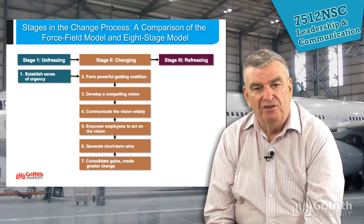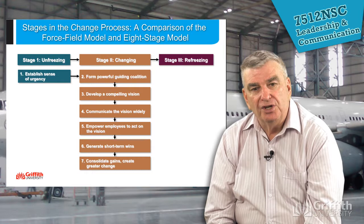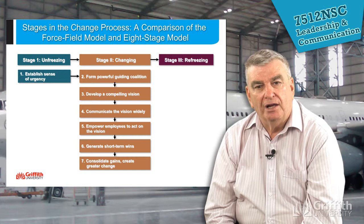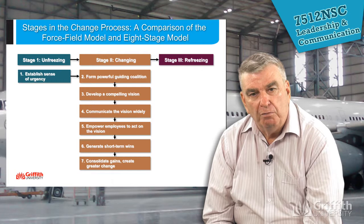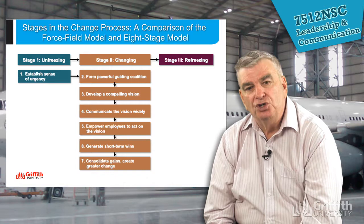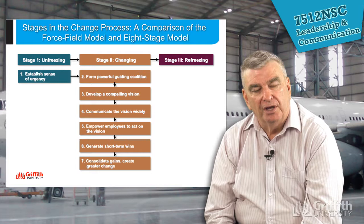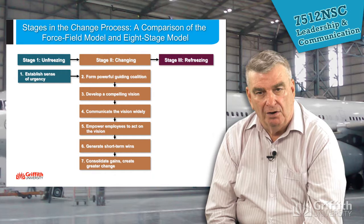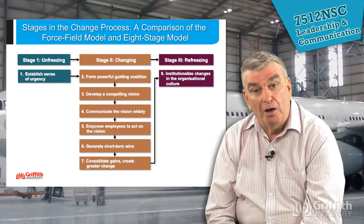Once we've consolidated gains, we can say to people: look at what we've achieved so far — think of what we can achieve for the future. Then we refreeze. Using the wagon analogy, as we make the first set of goals, we put a chalk block in place to stop the wagon from rolling back down, then bring about the next part of the change, put another chalk block under the wheel, until we get to the top and anchor it in place. That is, we refreeze and stop the organisation sliding back to where it was.